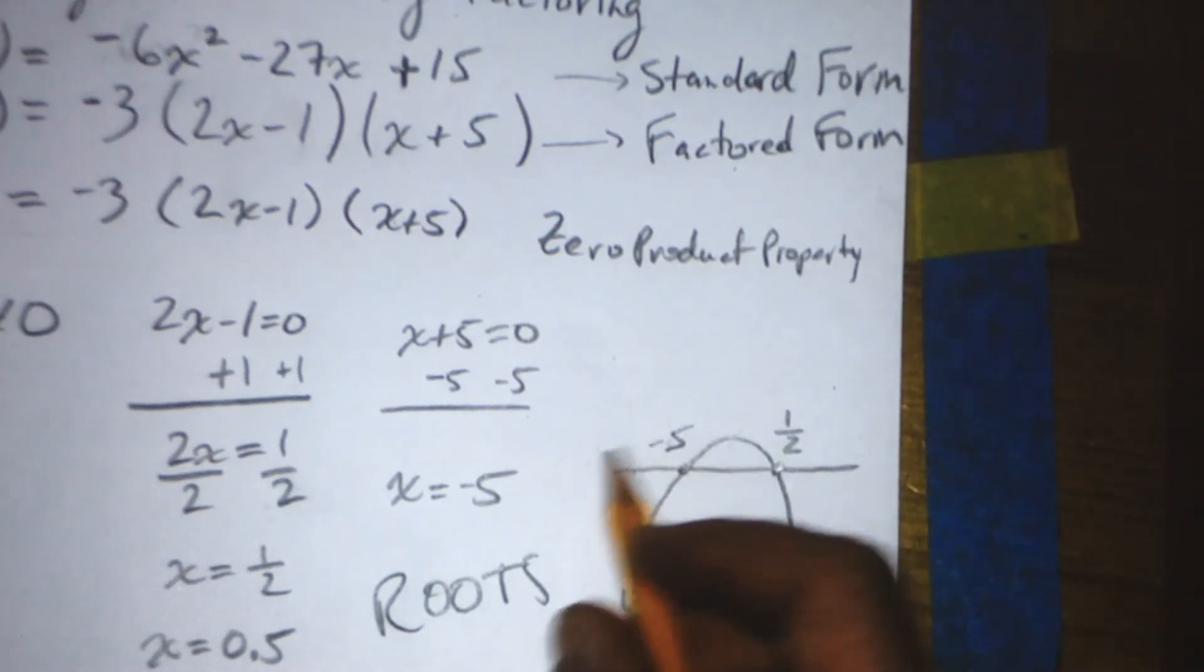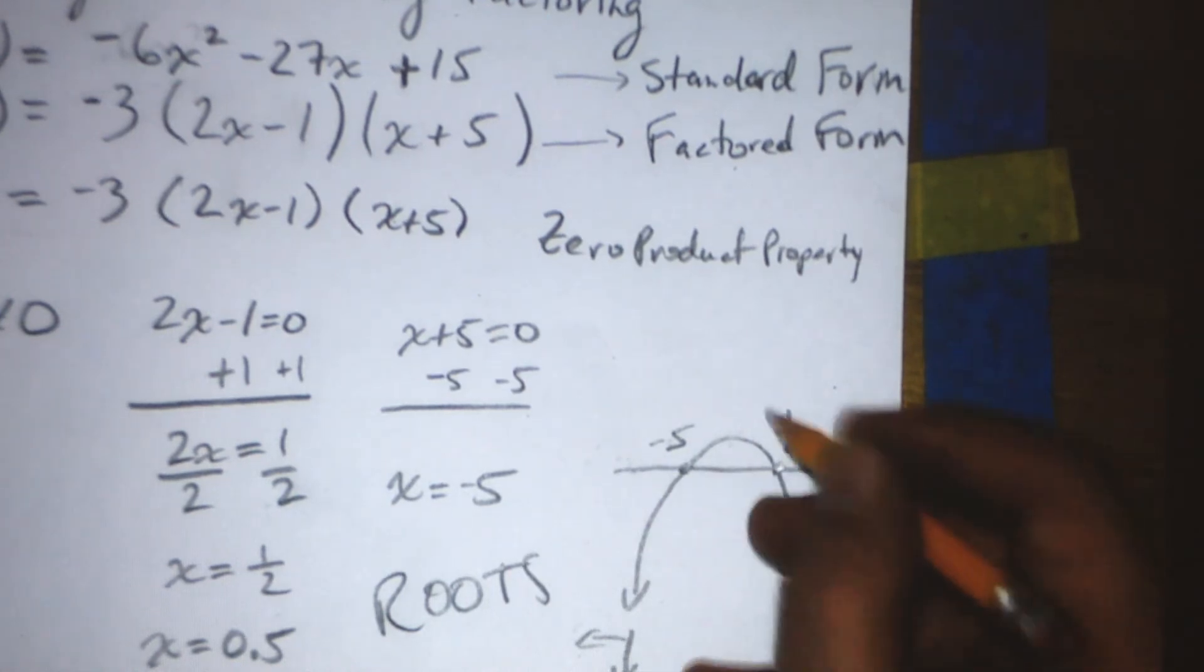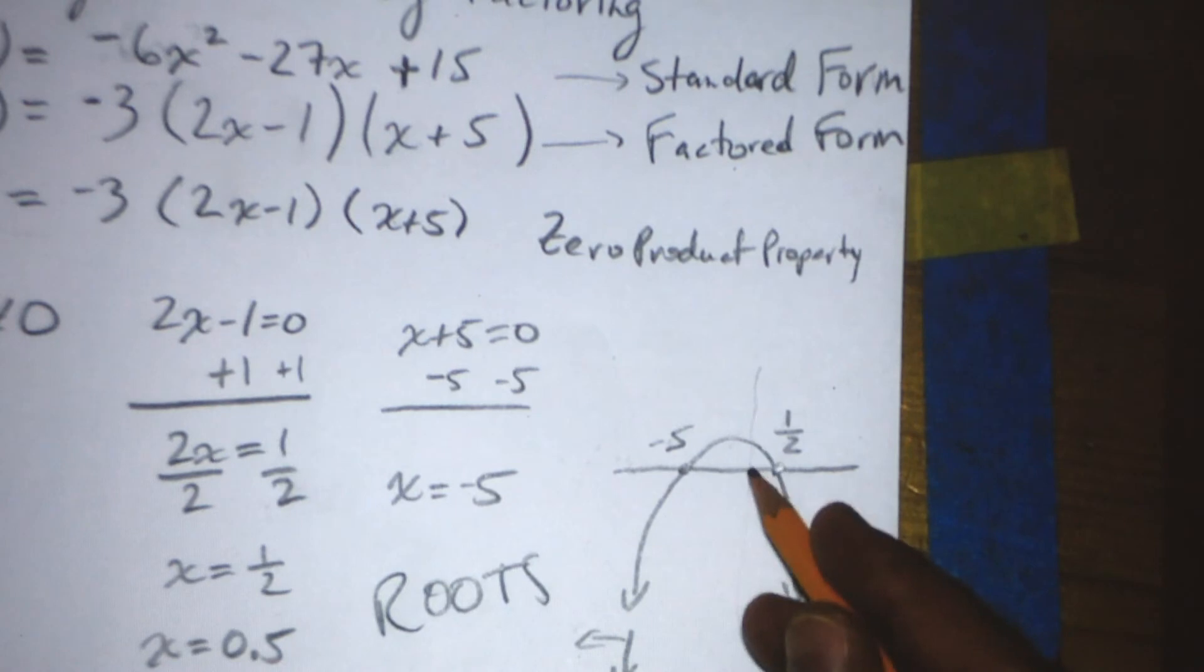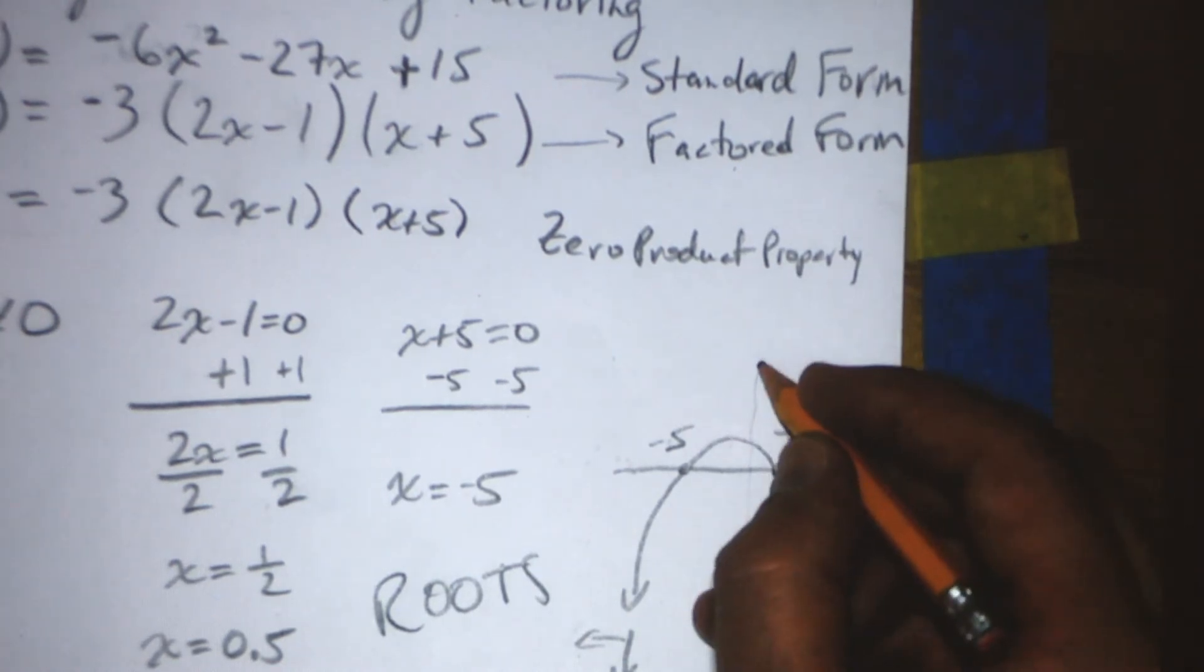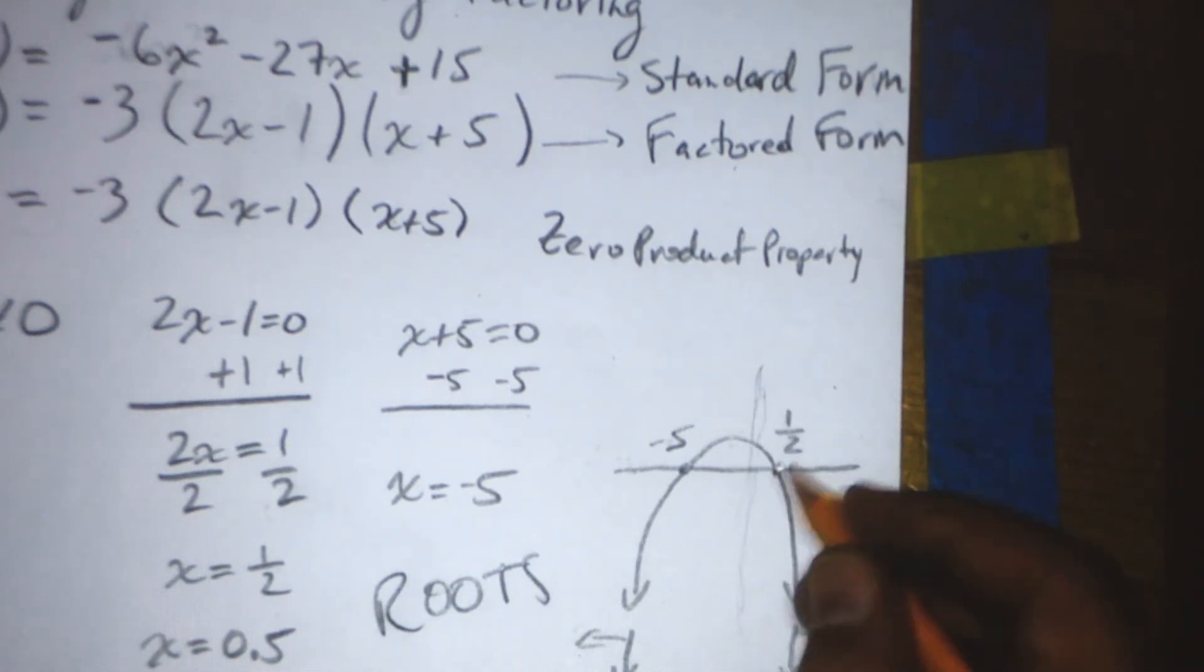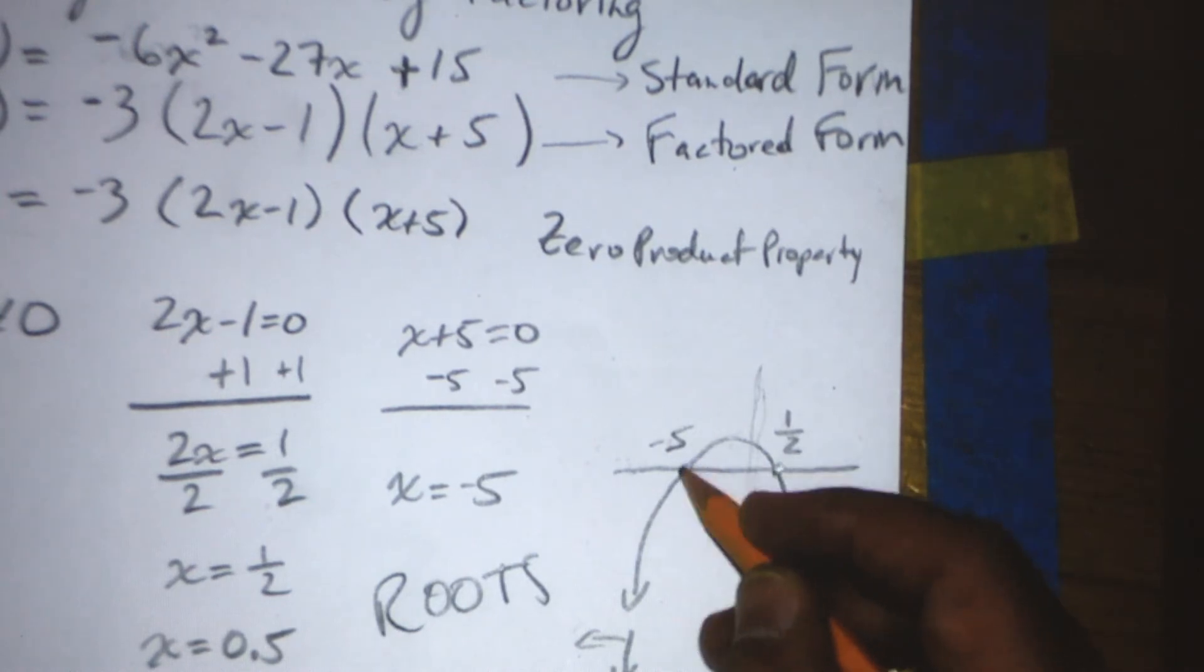Which means, where would the y-axis be? The y-axis would be right about here. It should actually be a little bit farther right, but that's okay. You can see that you have one root that is on the right of the y-axis where x is positive, and one root on the left of the x-axis where x is negative.